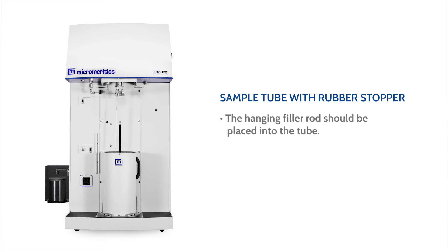the hanging filler rod should be placed into the tube before attaching onto the sample port. This requires the pins to be removed from the sample port if present. Remove the pins with the pin extractor.